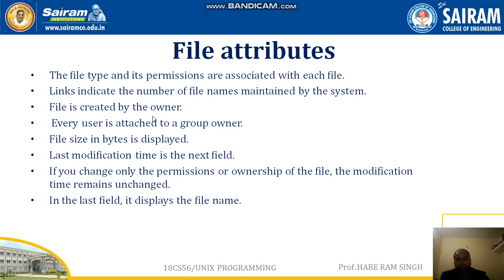The third attribute is owner — the person who has created the file. The fourth attribute is group owner — every user belongs to a group. The fifth attribute is file size, which is displayed in bytes. The sixth attribute is last modification time — when was the last time the file was accessed and modified, whether contents were deleted or appended. That is called the last modification time.